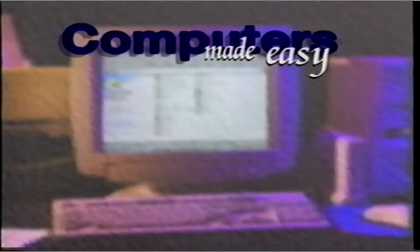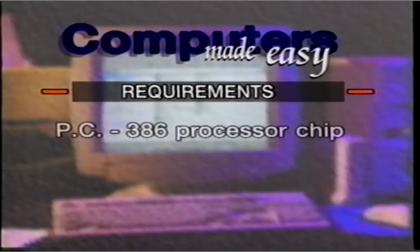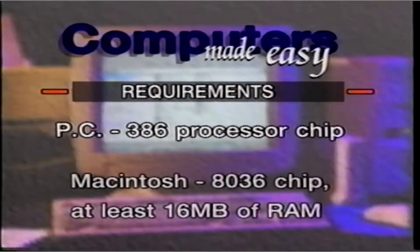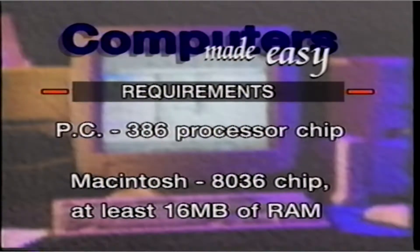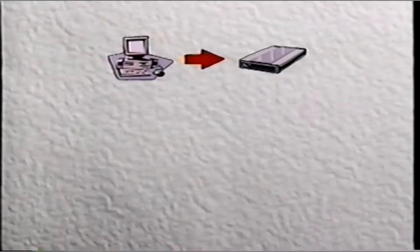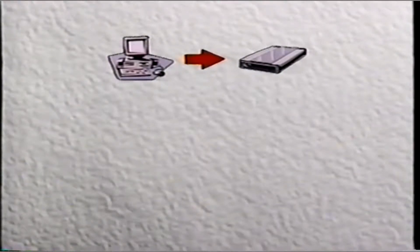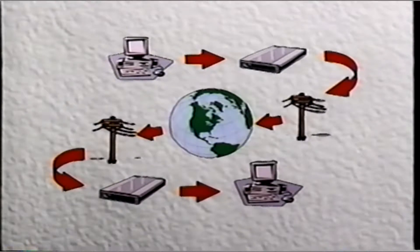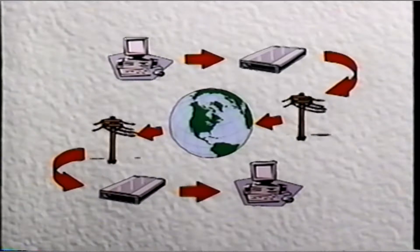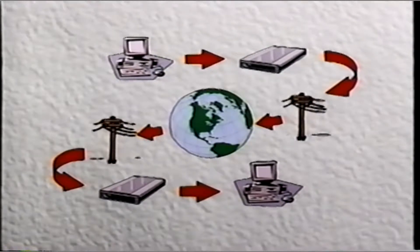Many computers have the capacity to be connected to the Internet. If you currently have a PC with at least a 386 processor chip, or a Macintosh with at least an 8036 chip, and at least 16 megabytes of RAM, you can probably get connected. But like most operations with computers, the more power you have, the better. You will also need a modem, which is a device that converts the digital output of your computer into a signal that can be transferred around the world. The modem is connected to a telephone or cable line that links it to the host computer. If it's your only telephone line, you won't be able to receive or make calls while you are connected to the Net.